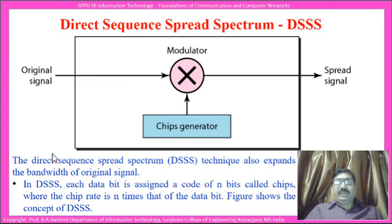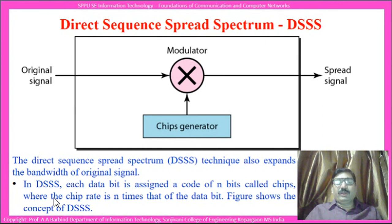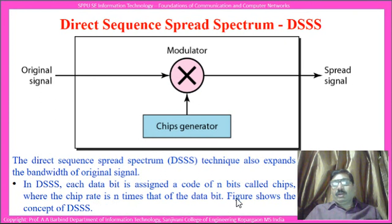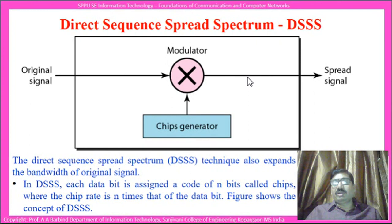The next spread spectrum technique is direct sequence spread spectrum, or DSSS. DSSS also expands the bandwidth of the original signal like FHSS. In DSSS, each bit is assigned a code of N bits called chips, where the chip rate is N times that of the data bit rate. A figure shows this concept: the original bit sequence enters a modulator, and based on which bit is arriving, it is replaced with a group of bits generated by the chip generator and sent on the output.